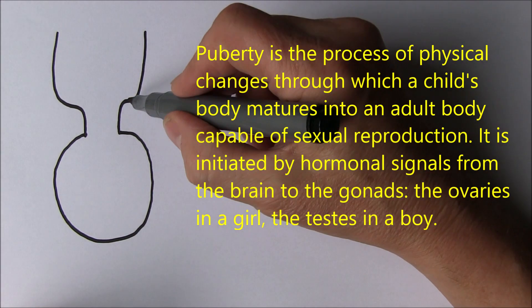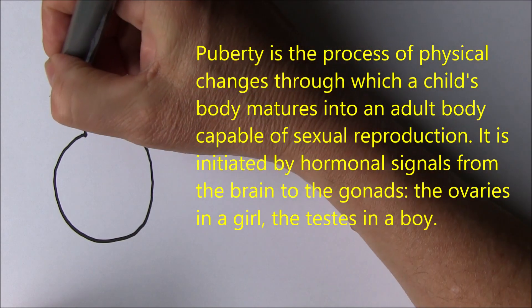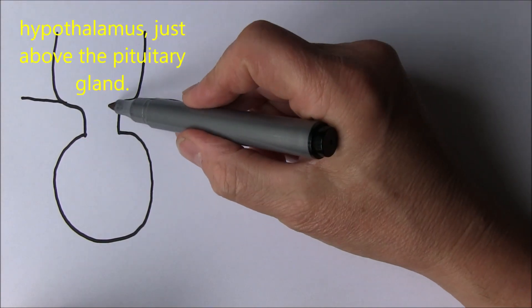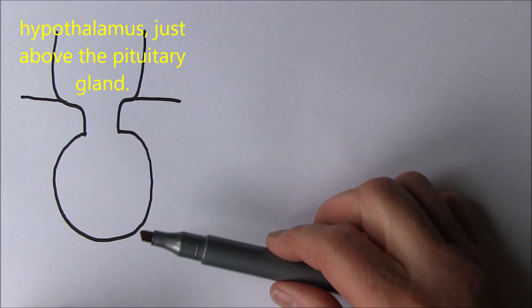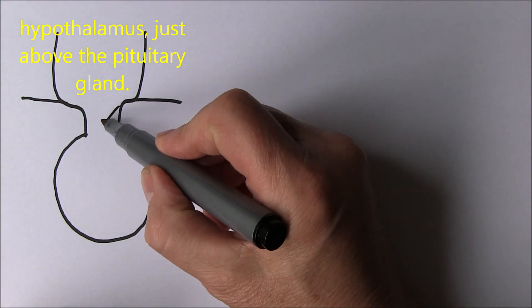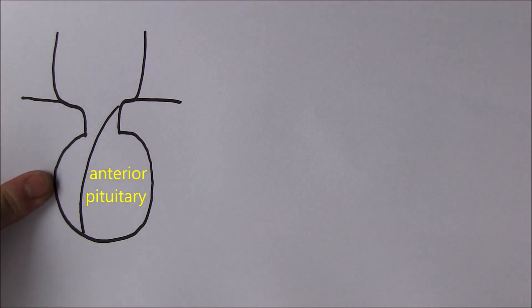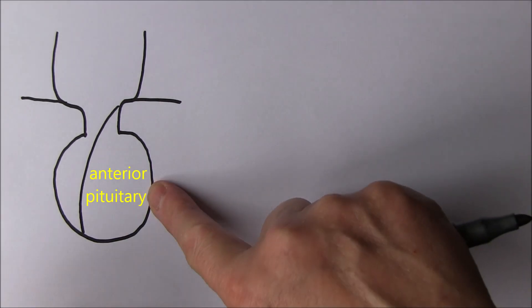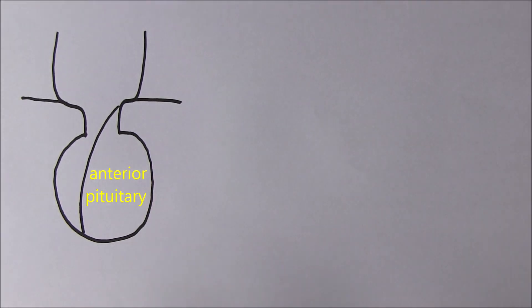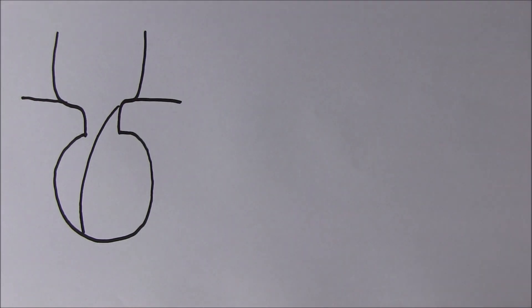Here we have the hypothalamus at the base of the brain. This is the pituitary stalk and the pituitary gland below. The pituitary gland is divided into two: the neurohypophysis at the back, which is the posterior pituitary, and the adenohypophysis at the front, which is the anterior pituitary. The hypothalamus is quite an amazing area of brain tissue — only four cubic centimetres, only 0.3% of brain volume, but it does an amazing amount of things.